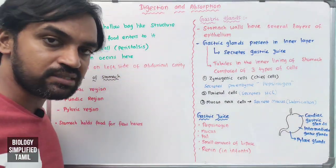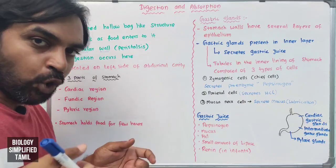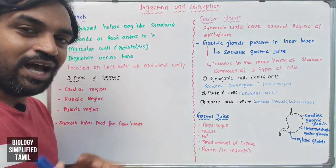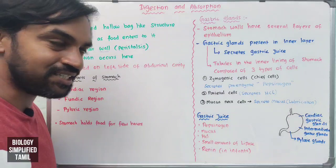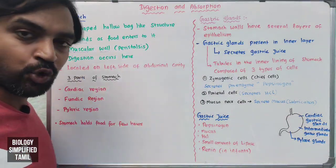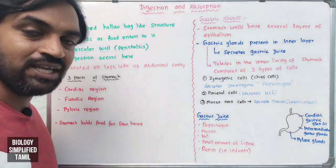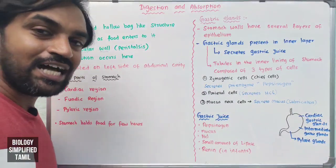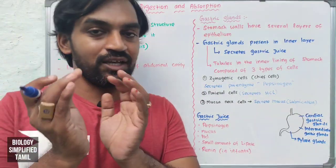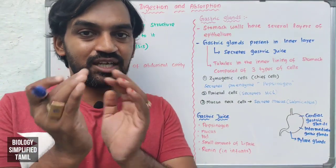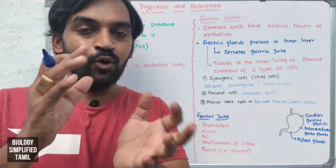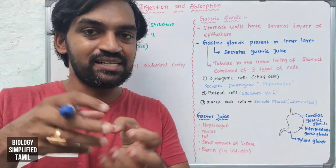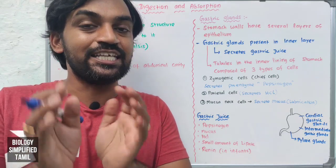Muscular walls — it is a muscle. If we press the pin at Colgate and press the 3D paste, it is a peristaltic movement. Peristalsis is a movement. The food moves with the help of muscular muscles. The stomach has a peristaltic, wavy movement.